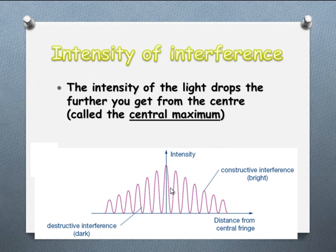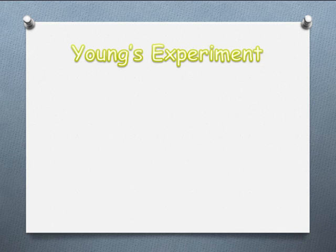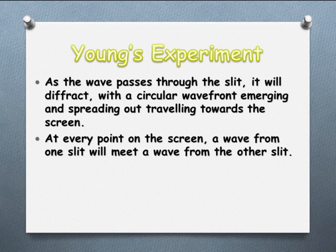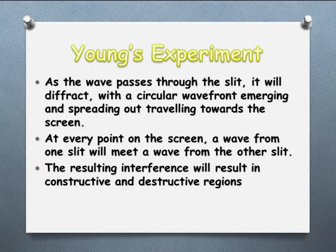If we put more of a diagram on it, we call that middle band the central maximum, and the intensity continues to fall as we get further away. The distances between each of the bands are much the same. Since this was a contradiction to expectation, Young looked at it and said: as waves pass through a slit, they diffract. We get this circular wavefront coming out and spreading towards the screen, and at every point on the screen it meets a wave from the other slit, resulting in destructive and constructive interference.